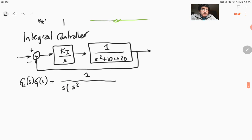s times s squared, sorry, we have ki in the numerator, s squared plus 10s plus 20. A third-order system.